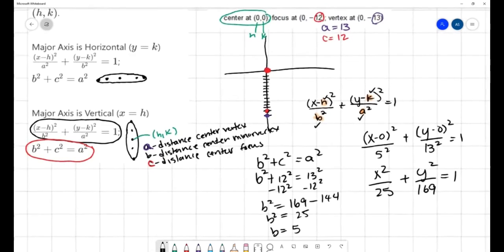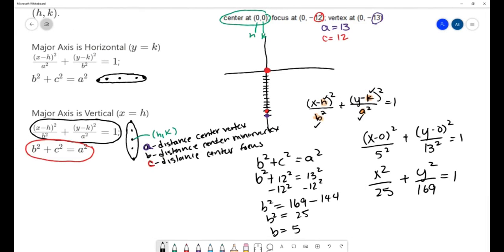And I can also graph this ellipse. Because of the symmetry, I can go up 13 and in both directions around the center, 5. And I'll be able to draw my ellipse using those vertices.